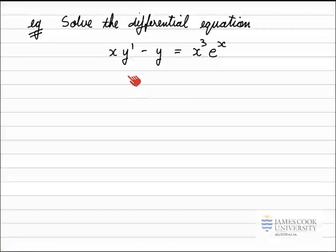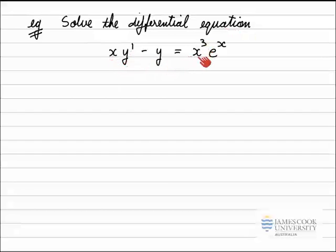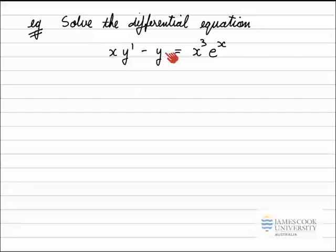In this example, we've been asked to solve the differential equation x y' minus y equals x cubed e to the x. The first thing I notice is that the highest derivative in this equation is a first derivative, so it's a first order differential equation. I see the first derivative and the y function, the dependent variables, are all raised to the power of 1, so this is a linear first order differential equation.